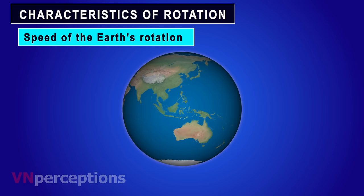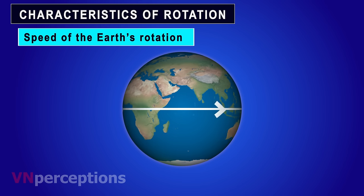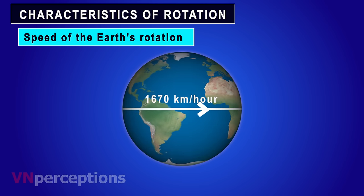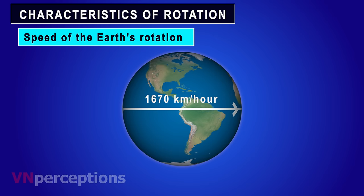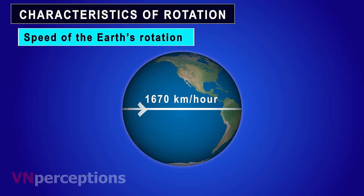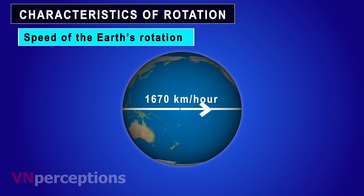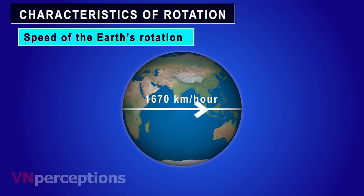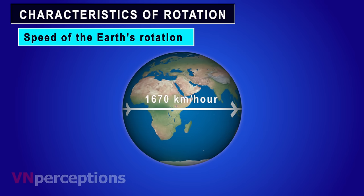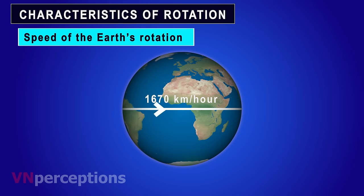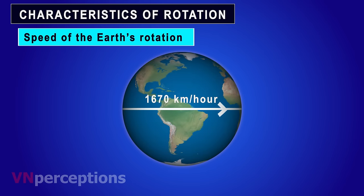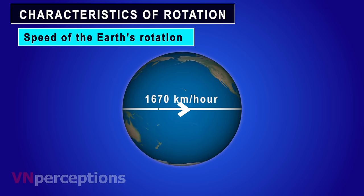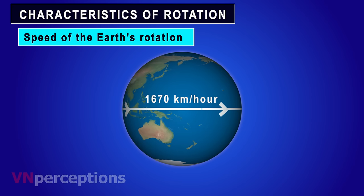The third characteristic is the speed of the earth's rotation. The speed of the earth's rotation at the equator is 1670 kilometers per hour, because the circumference of the earth is 40,070 kilometers. At the equator, the earth travels 40,070 kilometers covered in 24 hours, so in one hour the earth rotates at 1670 kilometers per hour.